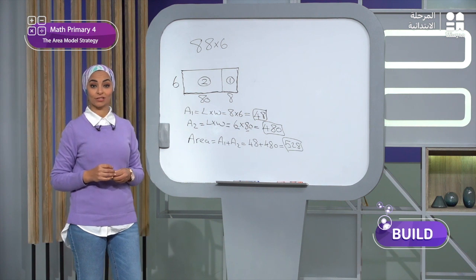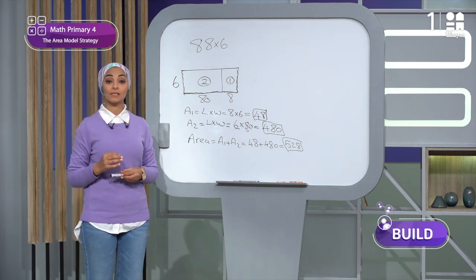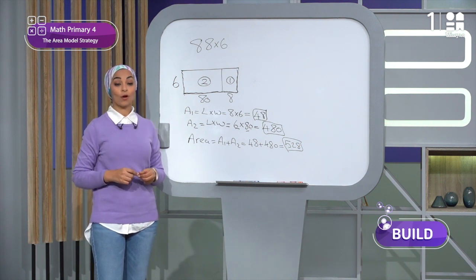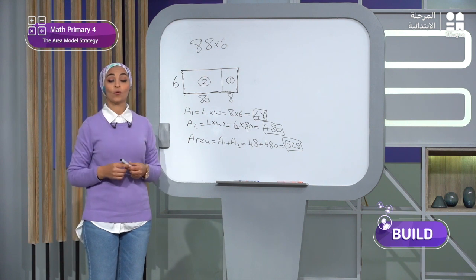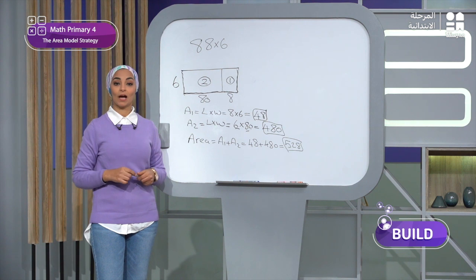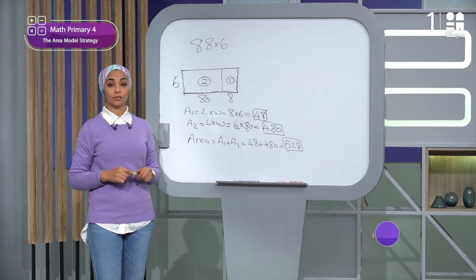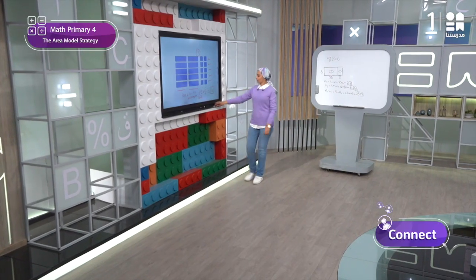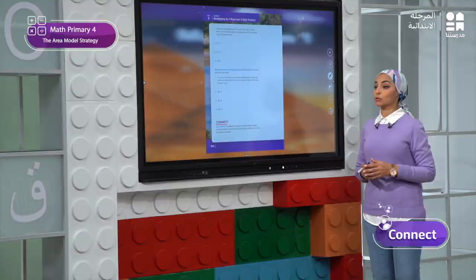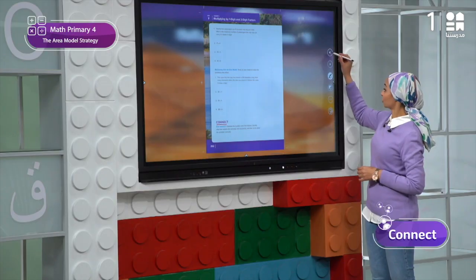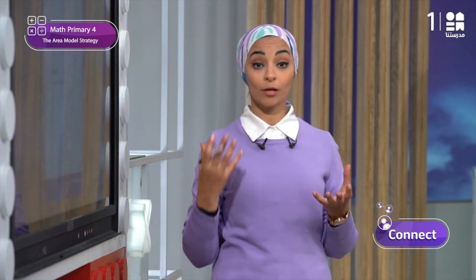Thus we have learned the first new way to solve multiplication problems — the area model strategy. In this concept of Unit 7, we will recognize different ways to solve multiplication problems. We have also used place value to decompose numbers into tens and ones. Now let's move to the connect part, page 263. A student was trying to find 36 times 8 using the area model strategy. Take time to review the answer and identify what the student did correctly.